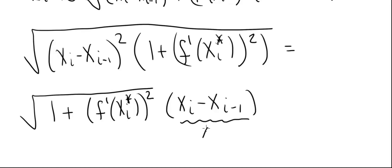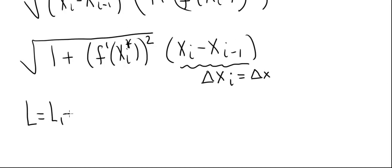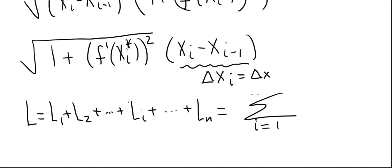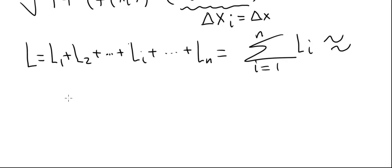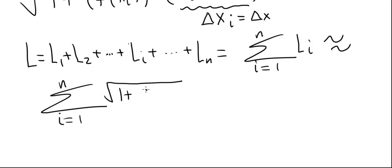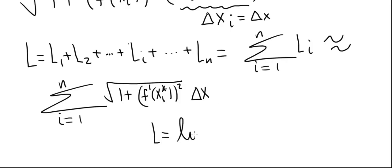We call xi minus xi minus 1 as delta xi — or delta x if all subintervals have equal length. The actual total arc length is the sum l1 plus l2 plus ... plus ln, which we write as the summation from i equals 1 to n of l sub i. This is approximately the summation from i equals 1 to n of the square root of 1 plus f prime of xi star squared, times delta x.